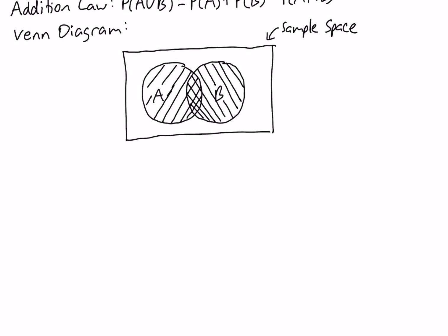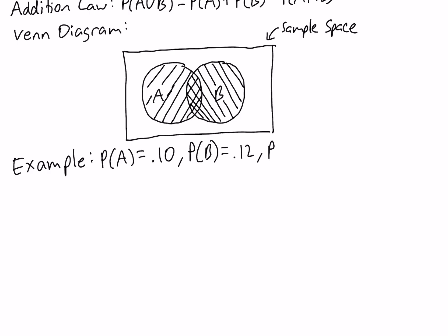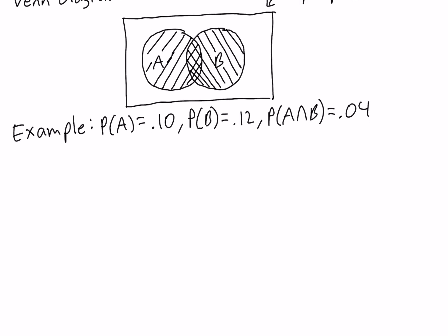Let's take a look at an example. Suppose the probability of A is 0.1, the probability of B is 0.12, and the probability of A intersection B is equal to 0.04. Then, using the addition law, the probability of A union B is 0.1 plus 0.12 minus 0.04, which is equal to 0.18. So we added up the probability of A and B and subtracted the intersection to get 0.18.